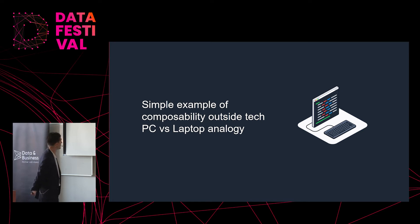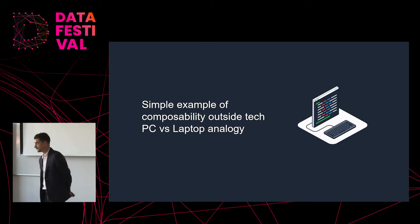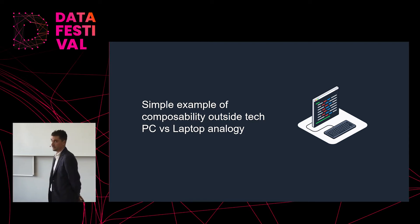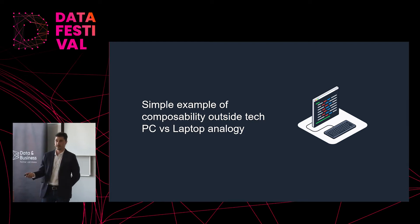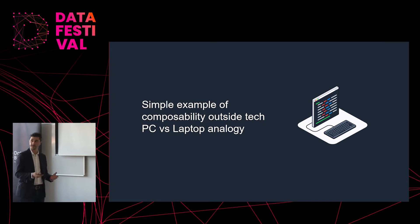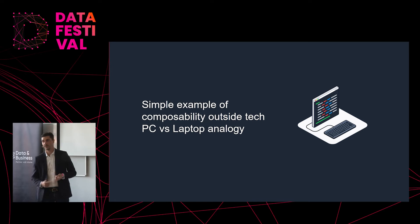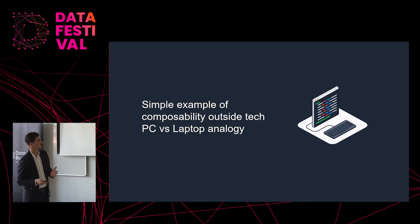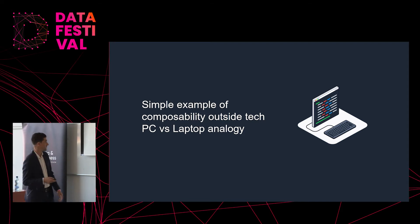There's a simple example of composability outside of tech. If you're a gamer deciding between a PC and a laptop, you're probably going to go with a PC. You wouldn't invest in a laptop if you're a heavy gamer, because it's very difficult to change the components. However, with a PC it's a different story — you have different components, you can change your memory, your graphics card — and this is crucial for being able to adapt and keep up with new video games coming on the market.